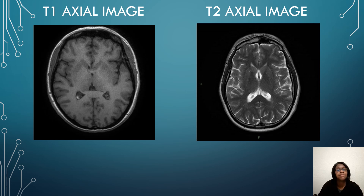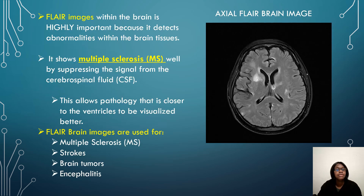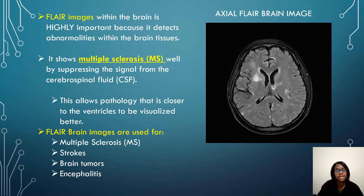This is an example of your T1 axial image. You also have your T2 axial image — this is a brain image. Now we have your axial FLAIR brain image, and FLAIR images within the brain are highly important because they detect abnormalities and can show multiple sclerosis by suppressing the signal from the CSF. FLAIR is useful for MS, strokes, brain tumors, encephalitis, and similar pathology conditions.